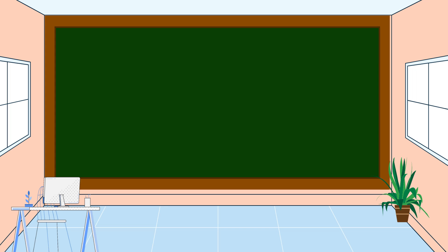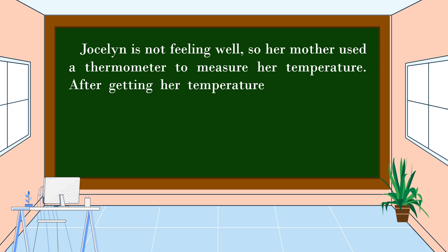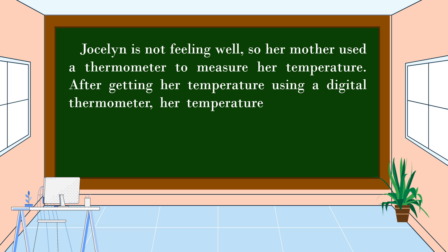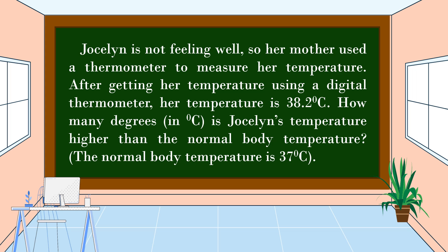Our first problem is a routine problem. Jocelyn is not feeling well, so her mother used a thermometer to measure her temperature. After getting her temperature using a digital thermometer, her temperature is 38.2 degrees Celsius. How many degrees in degrees Celsius is Jocelyn's temperature higher than the normal body temperature? The normal body temperature is 37 degrees Celsius.